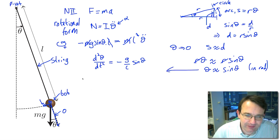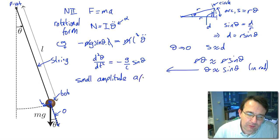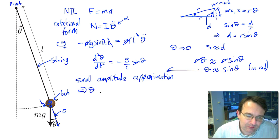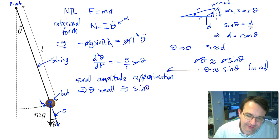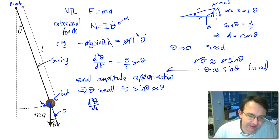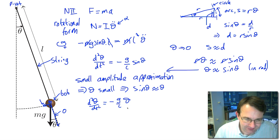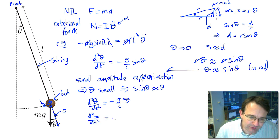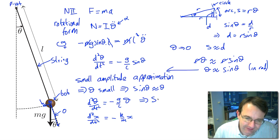Now let's come back to our pendulum and apply what's called the small amplitude approximation. We assume the pendulum is not given a large amplitude, so θ will be small, meaning sinθ ≈ θ. Substituting that into our equation, we now have d²θ/dt² = −(g/L)·θ. This looks much nicer. Comparing it to the mass-spring system — d²x/dt² = −(k/m)·x — we can see this is solvable and will give us simple harmonic motion.